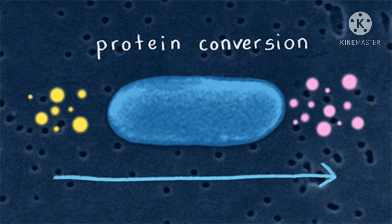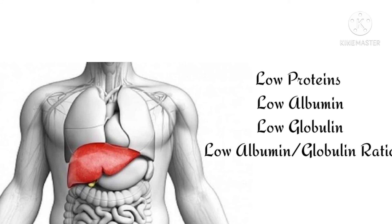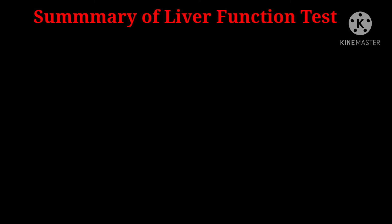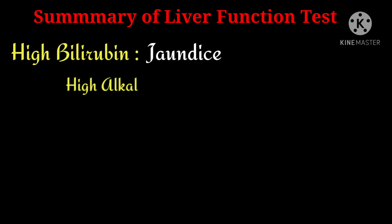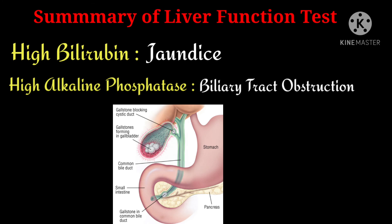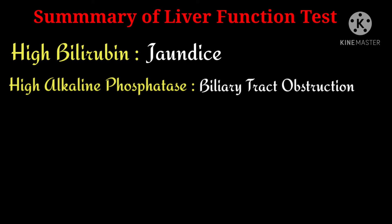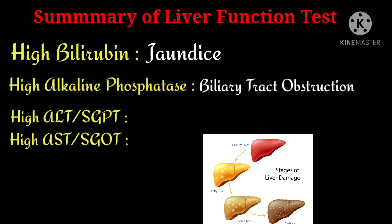The liver plays an important role in protein metabolism. Whenever there is a liver problem, protein levels — including albumin and globulin — will be decreased. In summary: whenever bilirubin levels are high, the person may suffer from jaundice. If alkaline phosphatase is high, there are chances of biliary duct obstruction, meaning a blockage in the biliary duct.